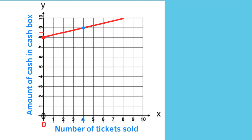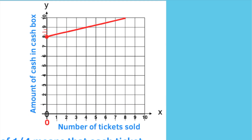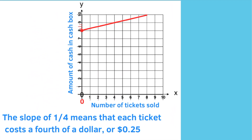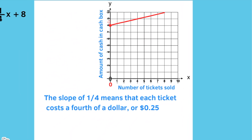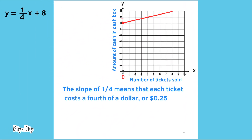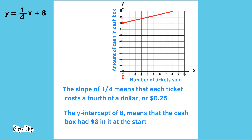Those four tickets show a rise of exactly one dollar — four units to the right and one dollar up. The slope of 1/4 means that each ticket costs a quarter of a dollar, or 25 cents. The y-intercept of 8 means that the cash box had $8 in it at the start.